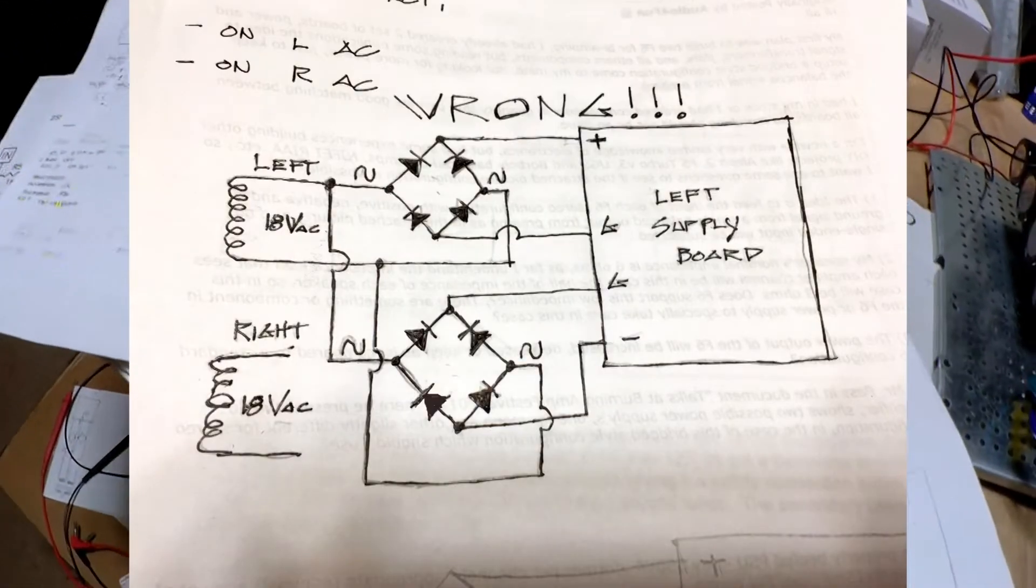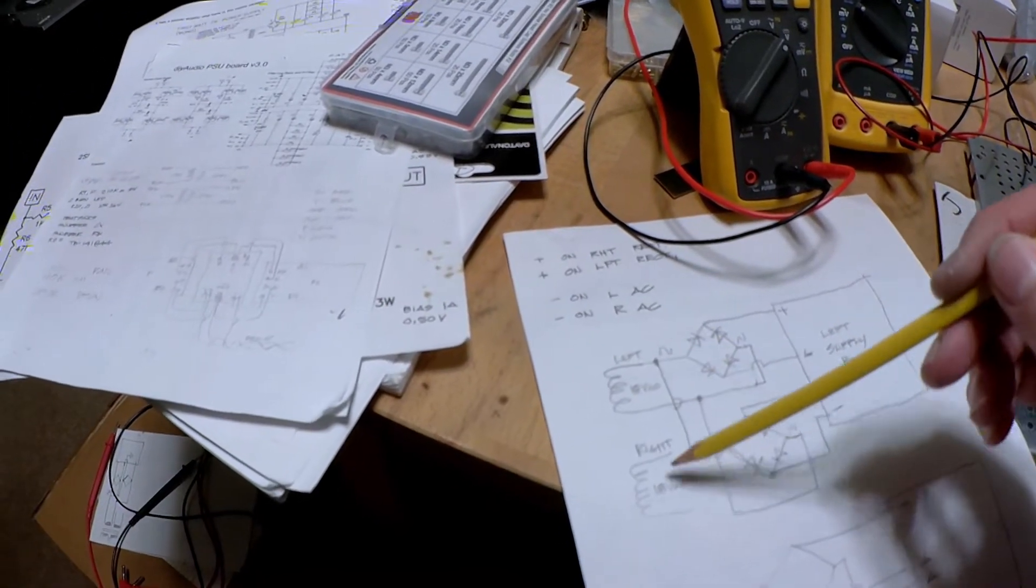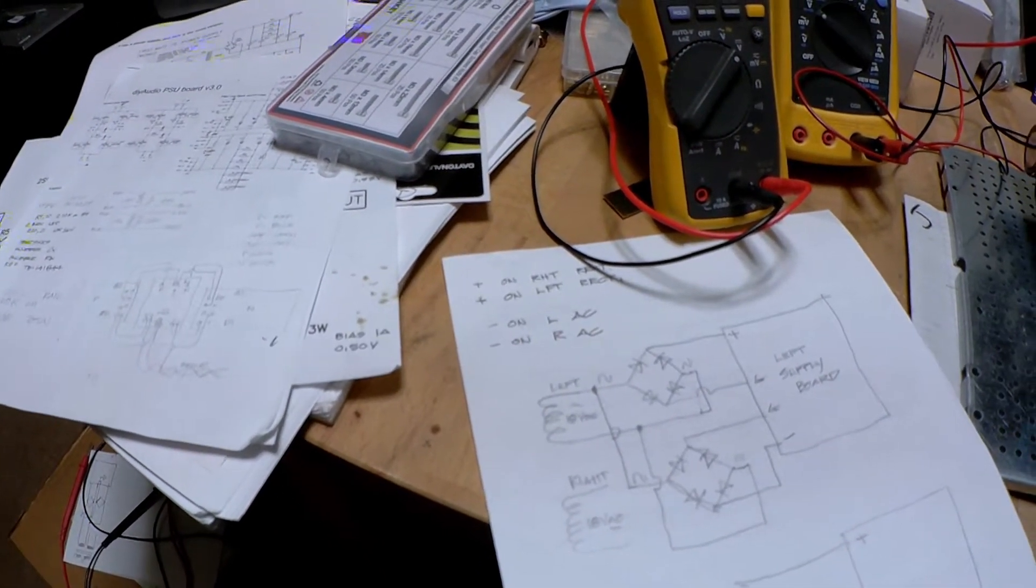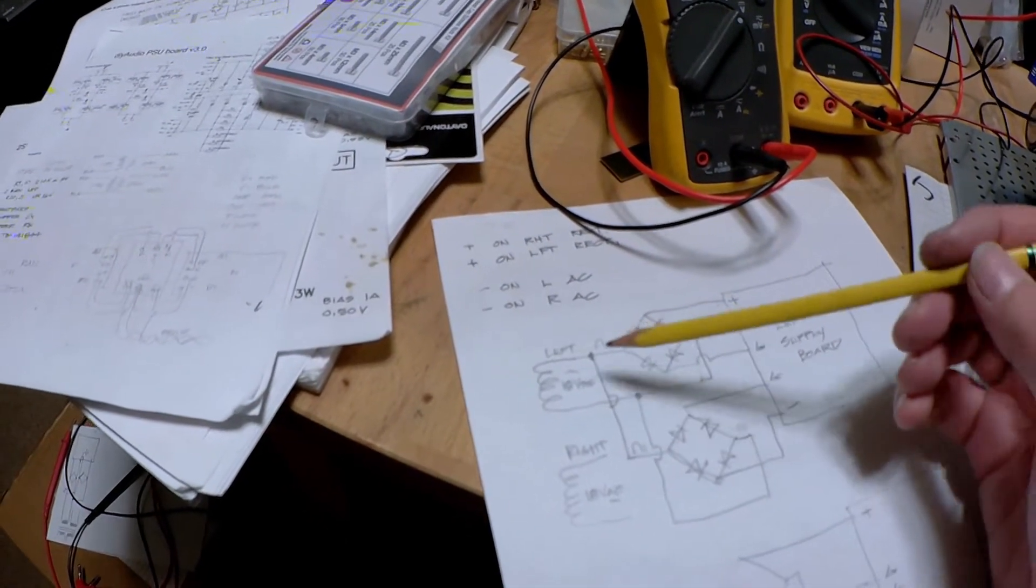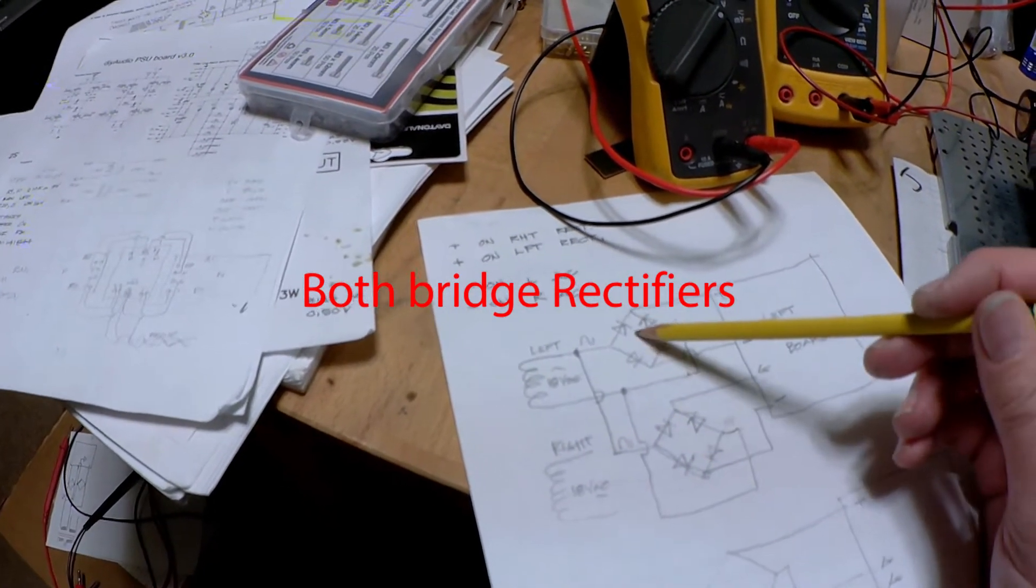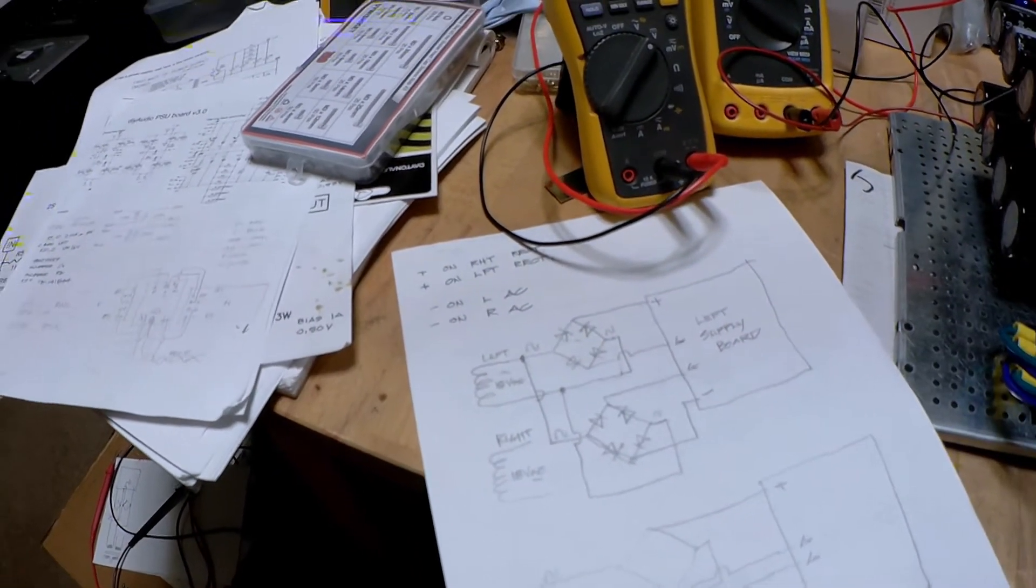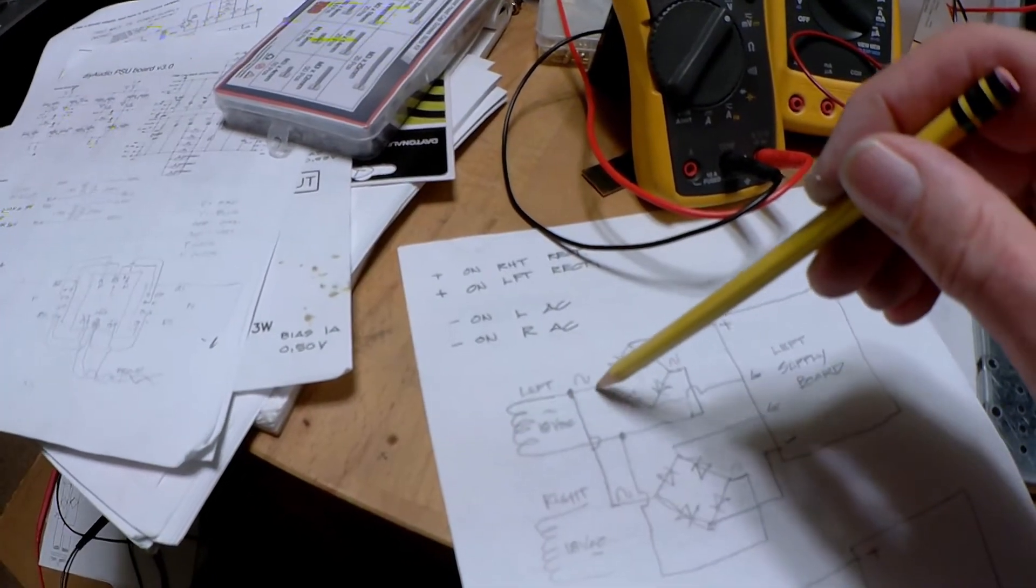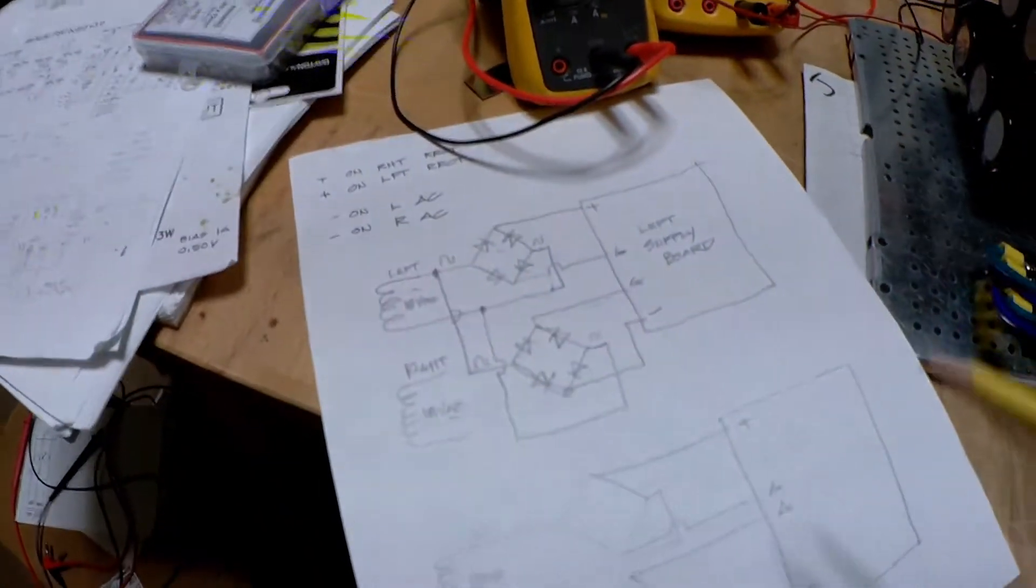But anyway, if you look, I have a very bad diagram here. And basically, what I had done is you have the two 18-volt secondary windings coming out of the transformer. And what I had done is for each channel, I had hooked both rectifiers, the positive supply and the negative supply, both to one winding. Which gives you a very, it's close, it's not quite a short, but it's getting there.